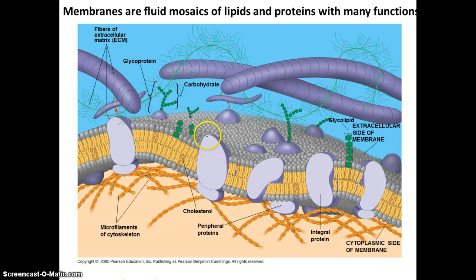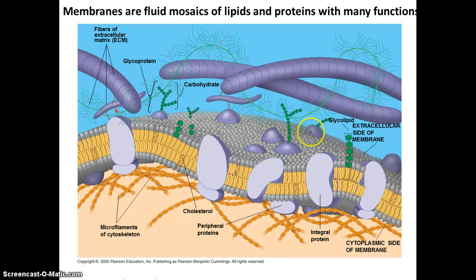Some proteins cut across the bilayer. Some proteins are just at the periphery of the cell membrane. You also have carbohydrate groups attached to proteins, or carbohydrate groups attached to lipids. And then you have the extracellular matrix that helps in cell attachment, recognition, and other jobs.